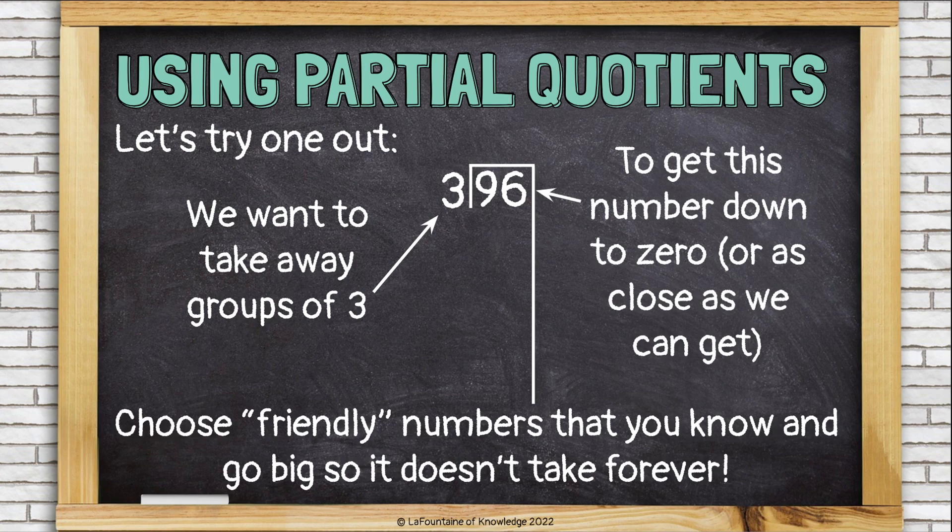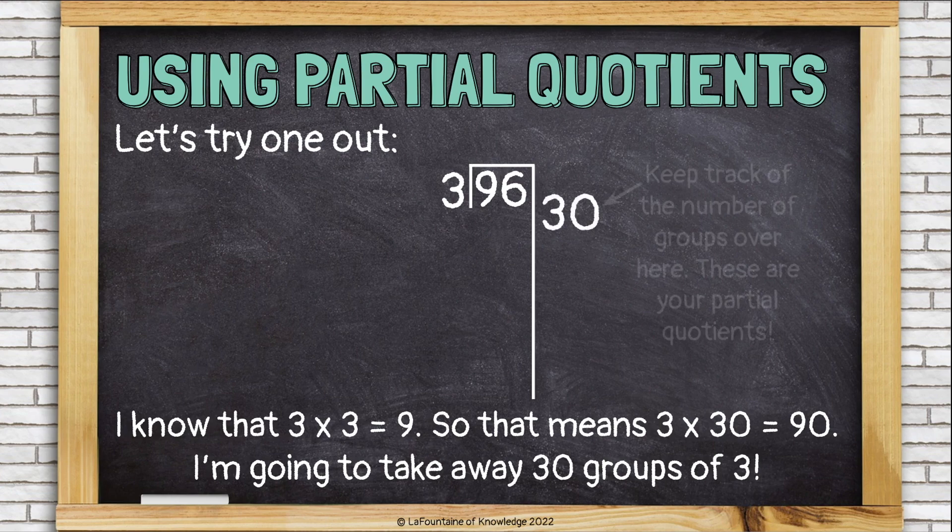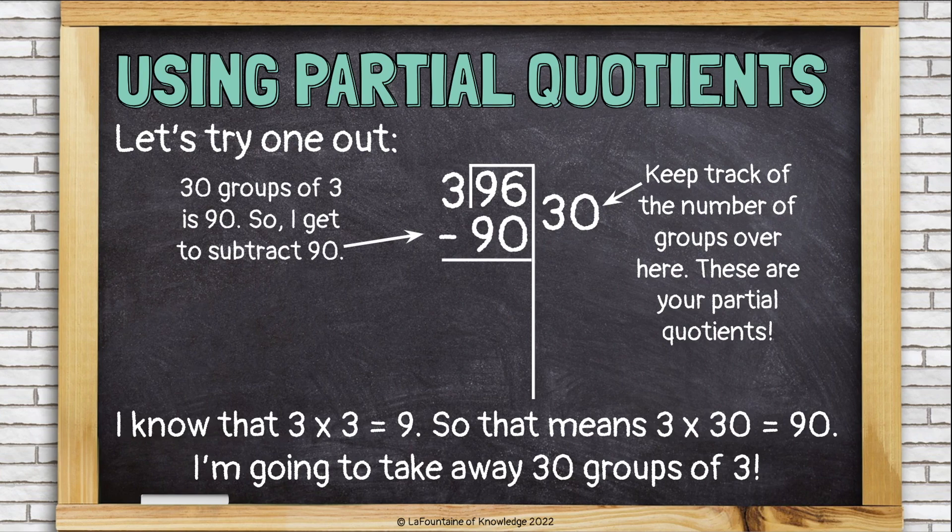Choose friendly numbers that you know and go big so that it doesn't take forever. I know that 3 times 3 is 9, so that means 3 times 30 is 90. I'm going to take away 30 groups of 3. Keep track of the number of groups over here. These are your partial quotients. 30 groups of 3 is 90, so I get to subtract 90.